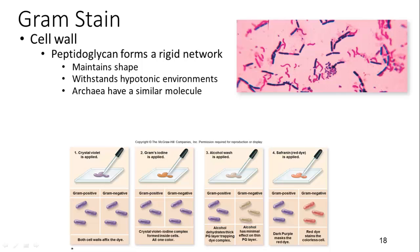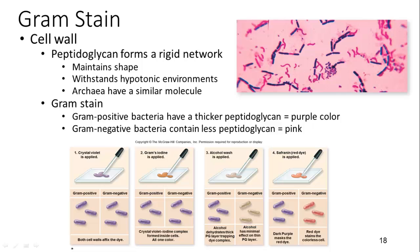Another way to differentiate bacteria is through Gram staining. Peptidoglycan forms a rigid network in the cell wall, helps maintain shape, and protects the cell in hypotonic environments. Gram positive bacteria have a thicker peptidoglycan wall, which makes them appear purple in the staining process. Gram negative bacteria contain less peptidoglycan and do not retain the Gram's iodine. In the staining process, Gram positive bacteria stain crystal violet; the Gram negative are washed away with alcohol, and Safranin is used as a counter-stain so that anything not purple will stain pink, allowing you to see the difference between the two.